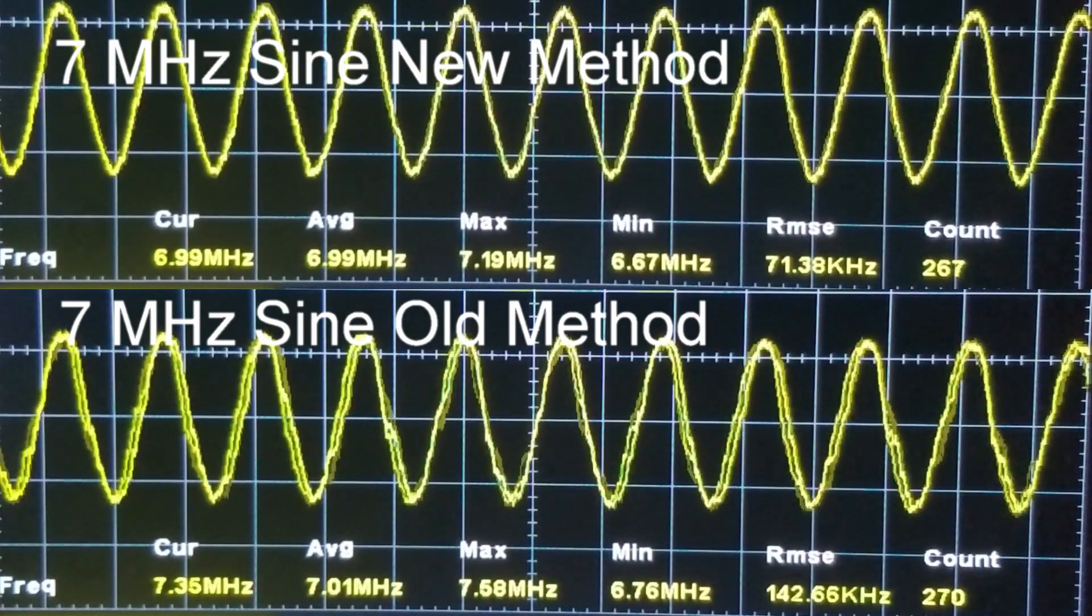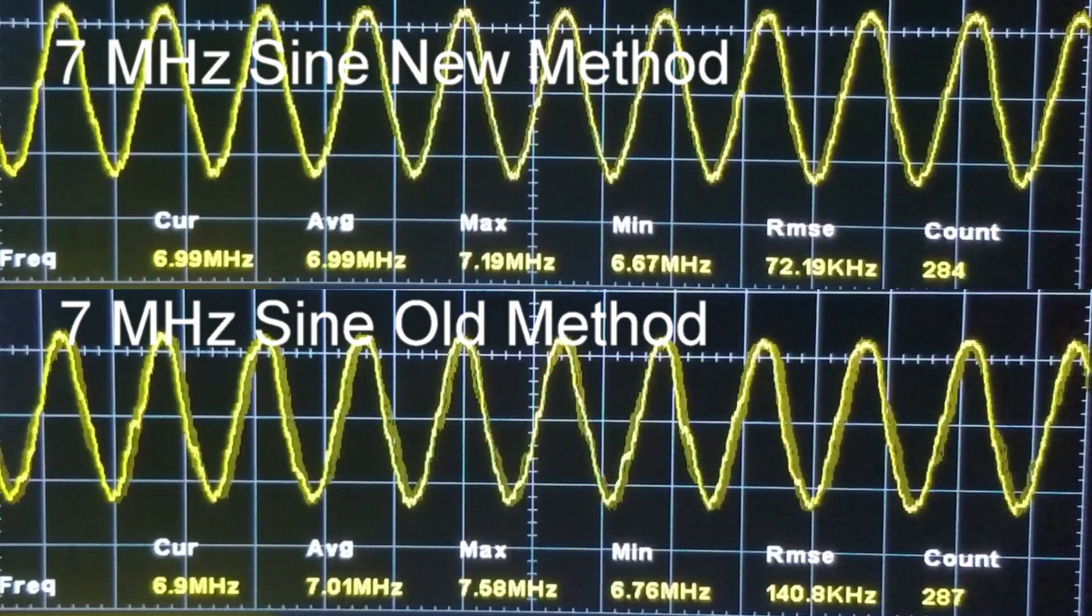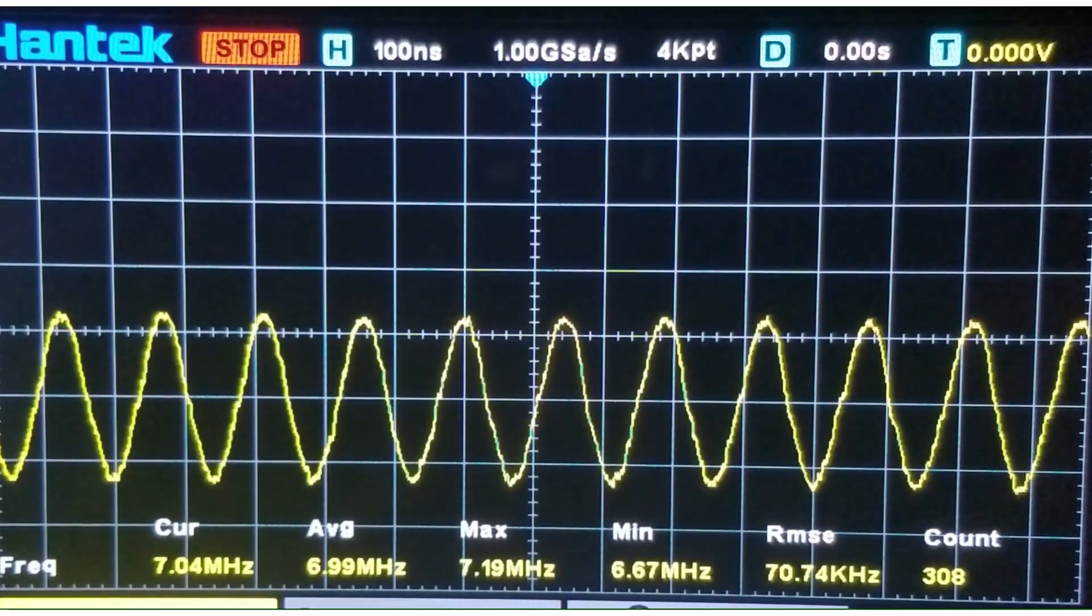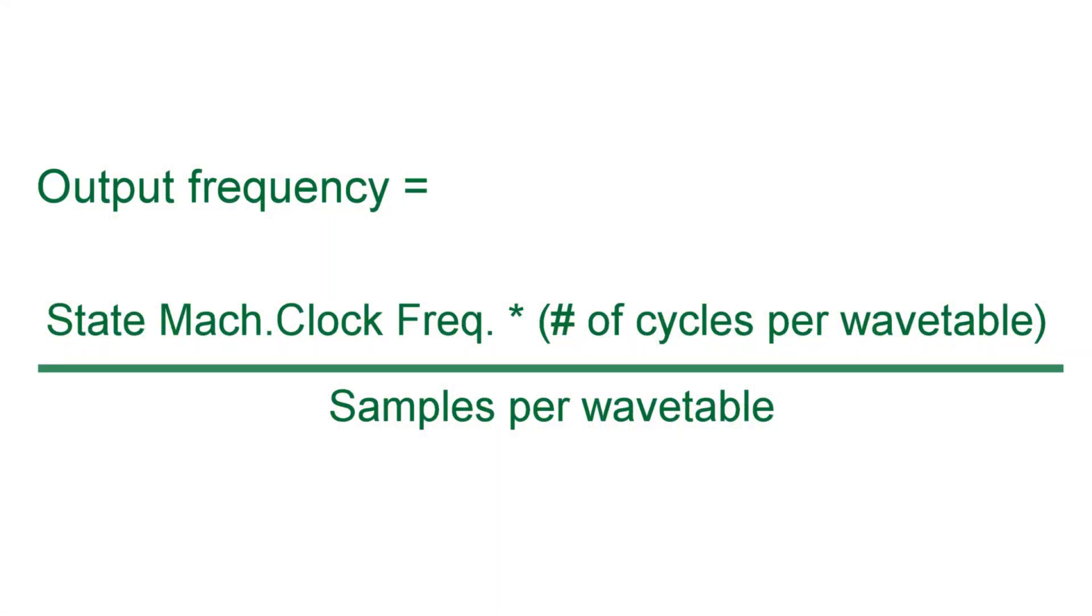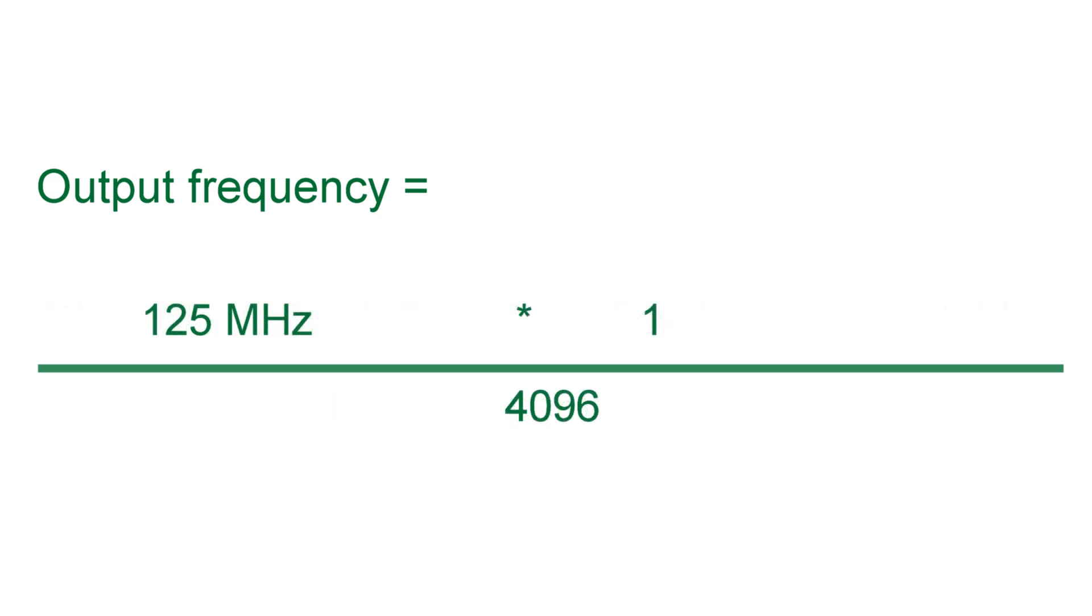So it looks like we can improve sine waves a bit using the new method. This technique works well for higher frequencies, but the choice of prime frequencies is pretty sparse for lower frequencies. In fact, the lowest frequency we can achieve with the new method is 30.5 kilohertz.